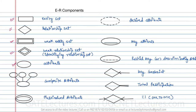This is how you can represent an attribute, and this is representing a composite attribute, and this is representing a multivalued attribute. This is representing a derived attribute, key attribute, partial key, and key constraint. In the key constraint you can see the sign here.